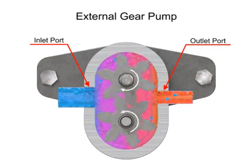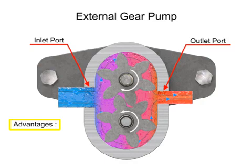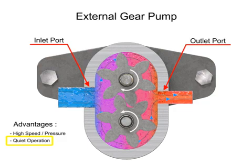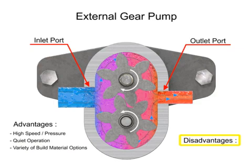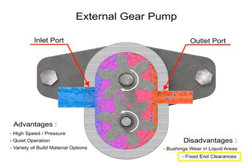The advantages of external gear pumps are their high speed and pressure, relatively quiet operation, and that their design accommodates a wide variety of materials. Disadvantages include bushings in the liquid area can become worn and that they have fixed end clearances.